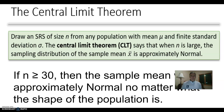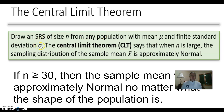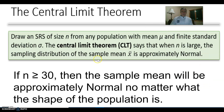The central limit theorem says: if we draw a simple random sample of size n from any population with a population mean of mu and a finite standard deviation of sigma, when n is large the sampling distribution of the sample mean is approximately normal. How large? Generally speaking, a rule of thumb is that if the sample size is at least 30, the sample mean will be approximately normal no matter what the shape of the population is.